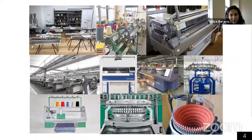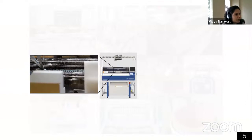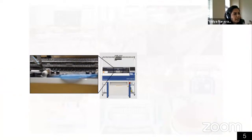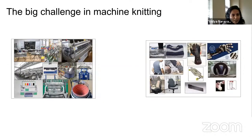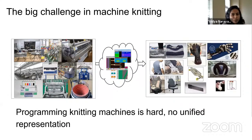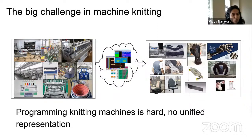If you zoom into your t-shirt and notice the loop-through-loop structure, what you're looking at is a knit fabric. In industry, how are all these objects made? They're made on machines like these knitting machines, which all have different capabilities. If you zoom into one of these complicated systems, you'll notice they're made of many tiny needles that can be programmed to manipulate yarn into knit structures. The big challenge in machine knitting is that programming these machines is hard. Each machine comes with its own proprietary software that may not be easy to use for a non-expert.